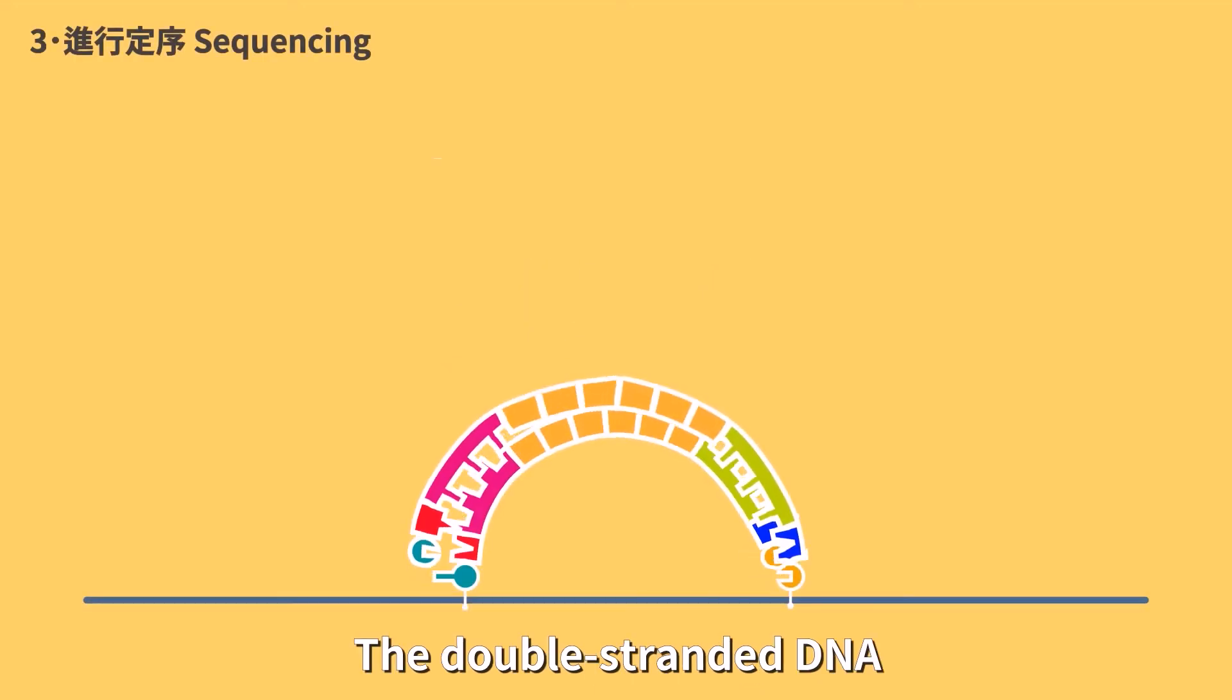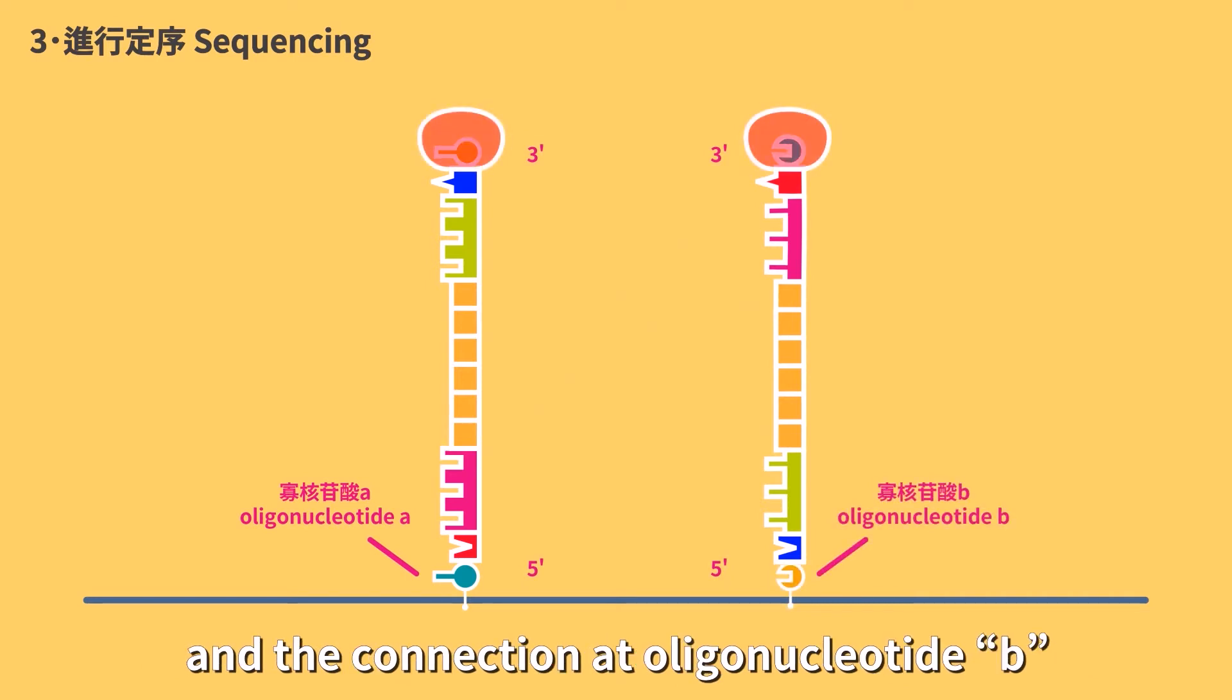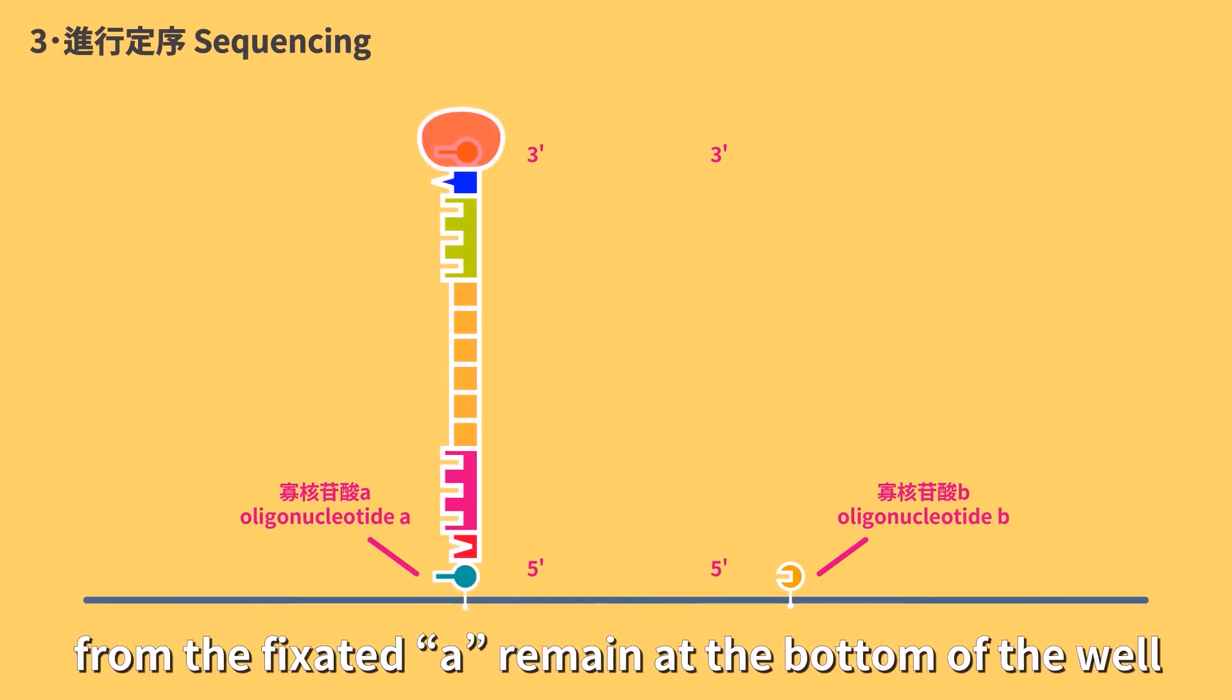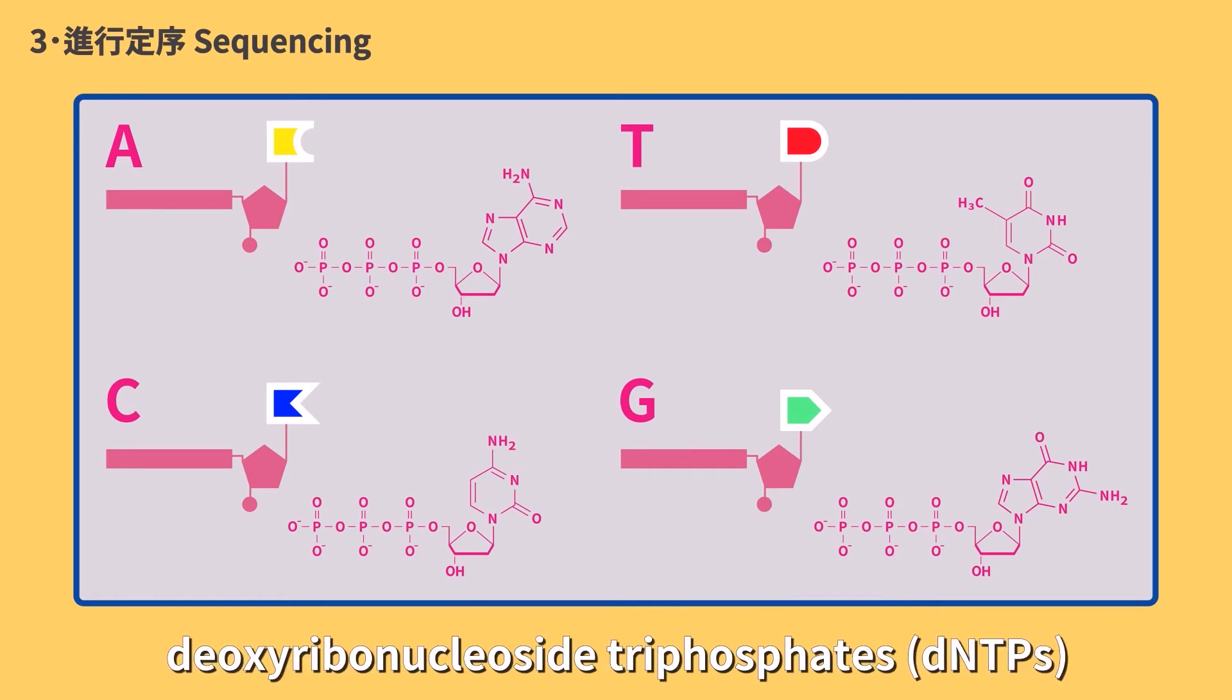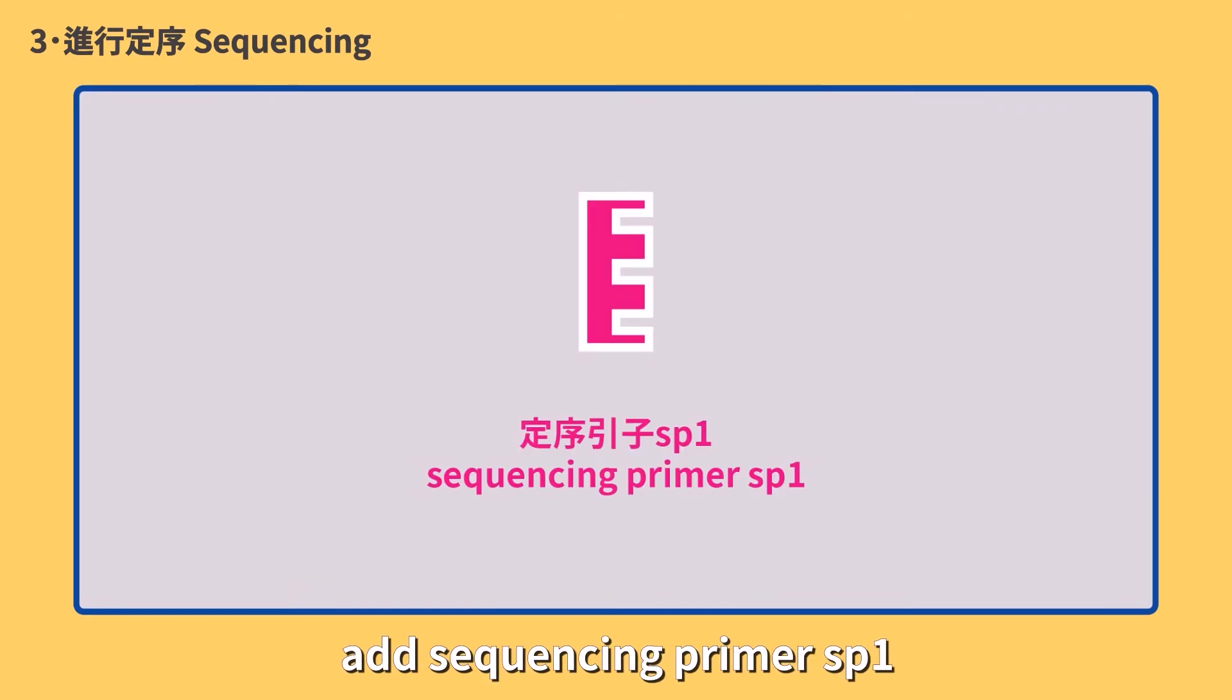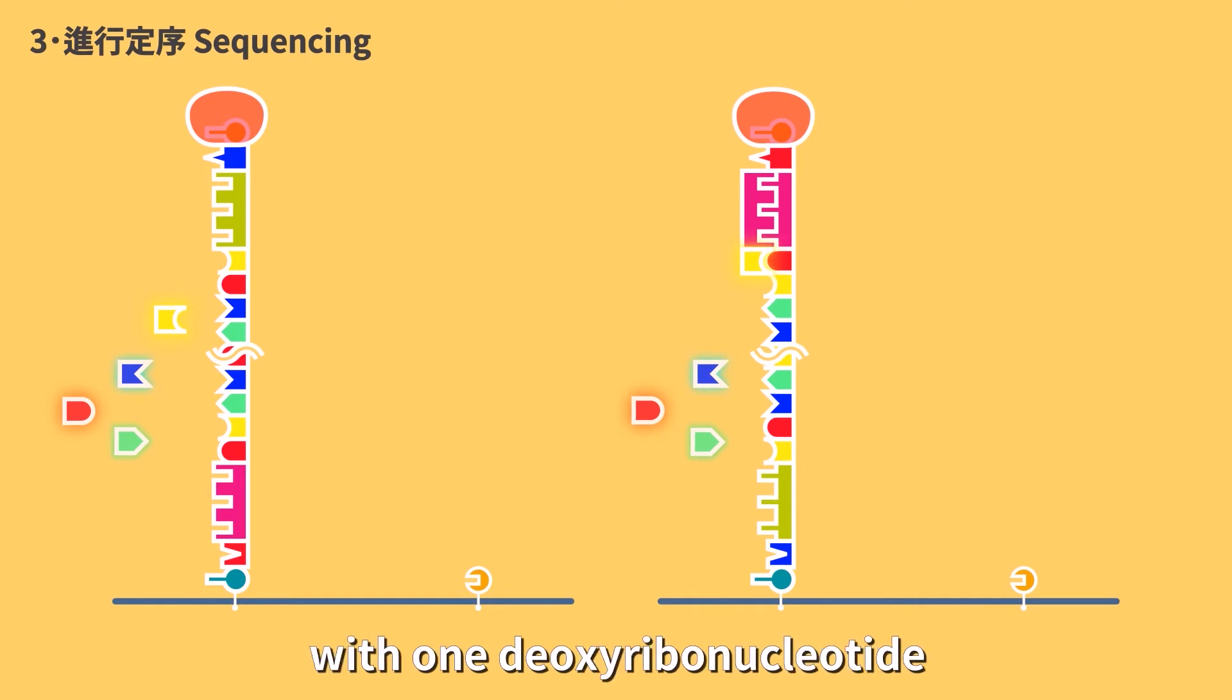Sequencing. The double-stranded DNA in the clusters are denatured and separated. The three prime end is protected to prevent degradation. The connection at oligonucleotide type B is excised to wash away the strands elongated from the fixated B, so that only the strands elongated from fixated A remain. Prepare four kinds of deoxyribonucleoside triphosphates, rebuild four bases with different color fluorophores and protect the three prime OH. To start sequencing, add sequencing primer SB1 to bind to the single strand. Using the single strand as template, elongate the sequencing primer with one deoxyribonucleoside.